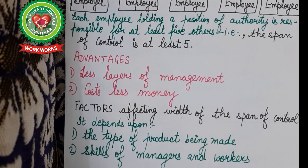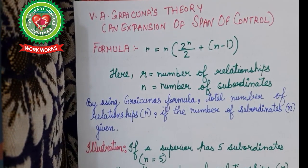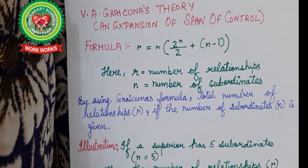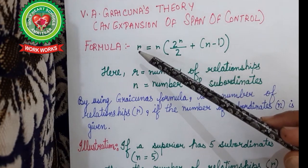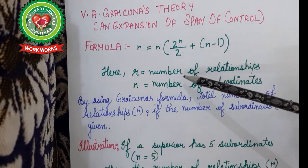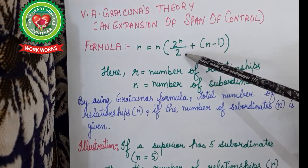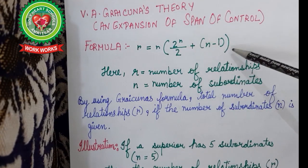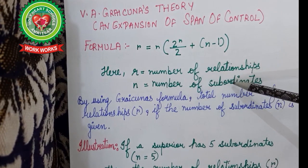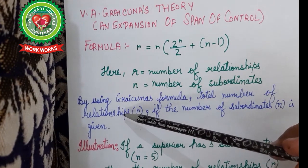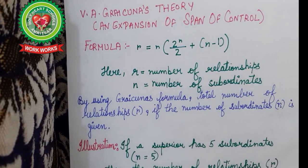Now we will discuss V.A. Graicunas' theory. He was a manager who, based on his experience, gave a theory as an extension of span of control. He provided a formula to calculate R, the number of relationships: R = N × (2^N / 2 + N − 1), where N is the number of subordinates. Using this formula, we can calculate the total number of relationships if the number of subordinates is given.